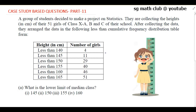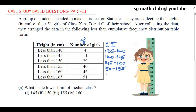To convert the table, we will first write the class interval and then the frequency. The class intervals are: 135–140, 140–145, 145–150, 150–155, 155–160, and the last class interval is 160–165.